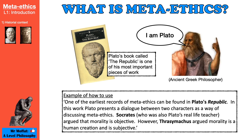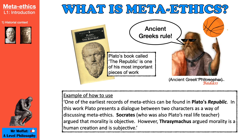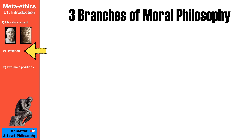This is the kind of contextual information you can use in assessments when you unpack what metaethics is. As is often the case, we can trace it back to the ancient Greeks. So what is metaethics and what are the two main positions in this area of philosophy?